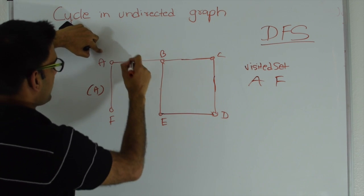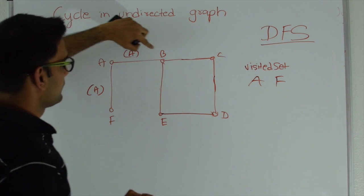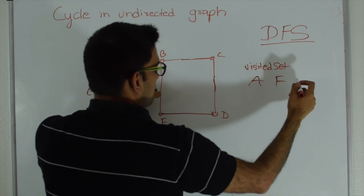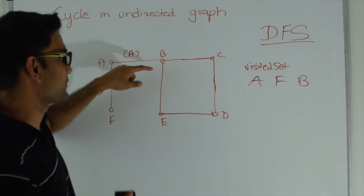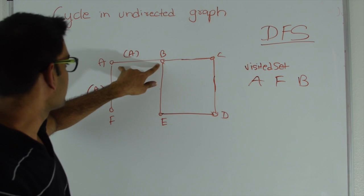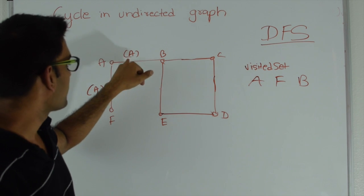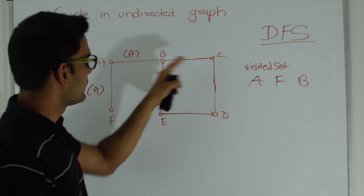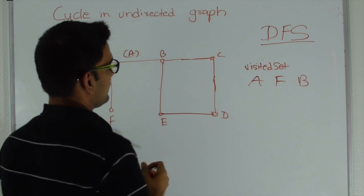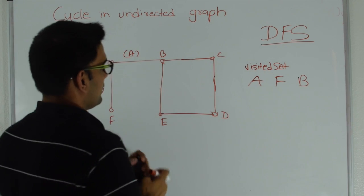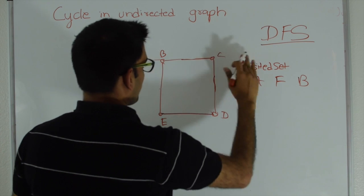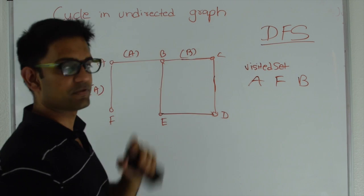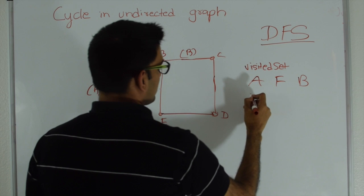Then A explores its other neighbor B, passing A as the parent. We put B into the visited set, and B explores its neighbors. The first neighbor it encounters is A, but since B is coming from A it knows it doesn't need to go in that direction. So it explores another neighbor — say C. C is not in the visited set, so we go from B to C, passing B to C as the parent, and put C in the visited set.